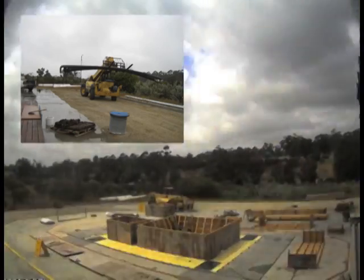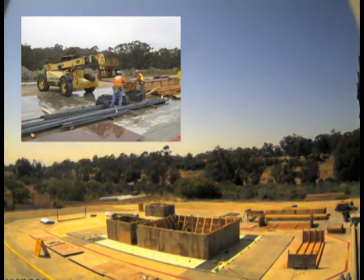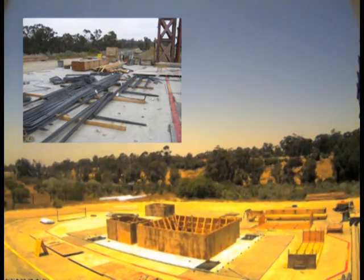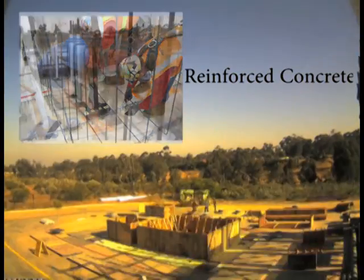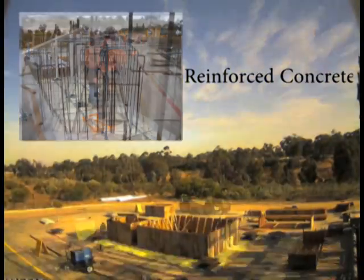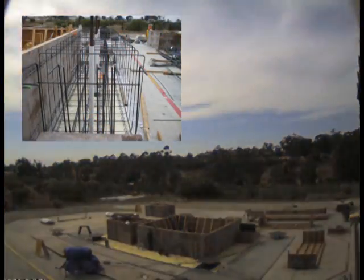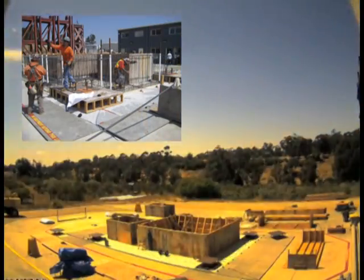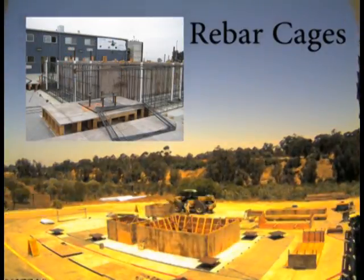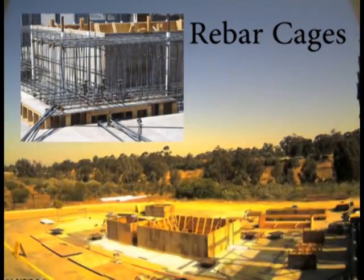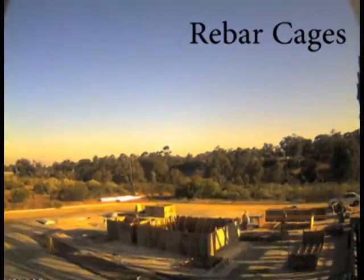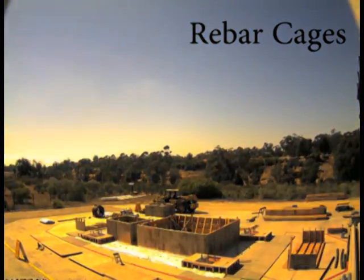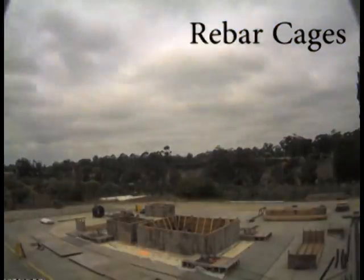After the construction of the foundation formwork is complete, steel reinforcing bars, simply termed rebar in the field, are installed. When a concrete section is reinforced with steel rebar, it is termed reinforced concrete. These carbon steel reinforcing bars, which are ribbed to facilitate a strong mechanical interlock with the concrete, are used to increase the tensile strength of concrete since it is weak in tension. Steel reinforcing bars are connected together in different directions to form rebar cages, which can be built either on- or off-site and then placed inside the foundation formwork. In this project, the foundation rebar cages were built on-site.